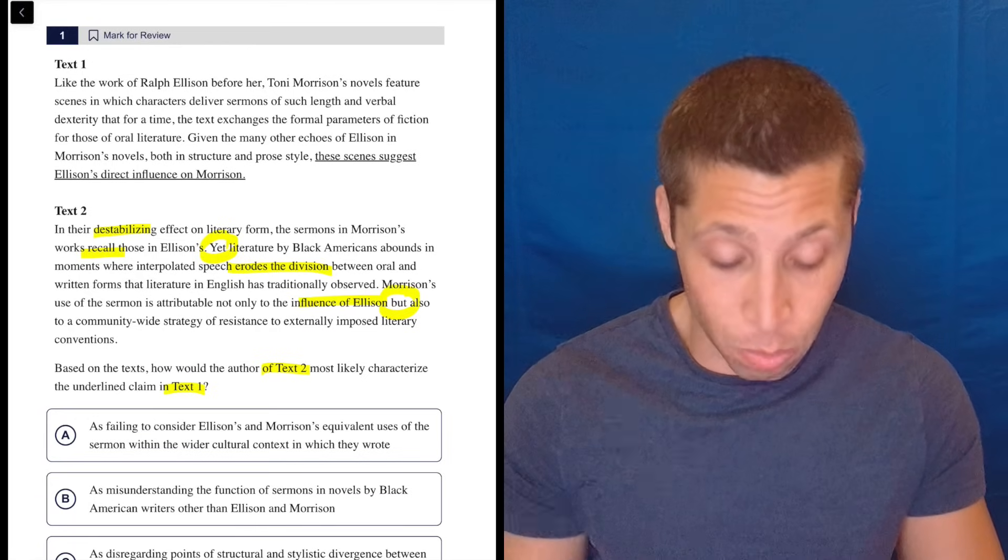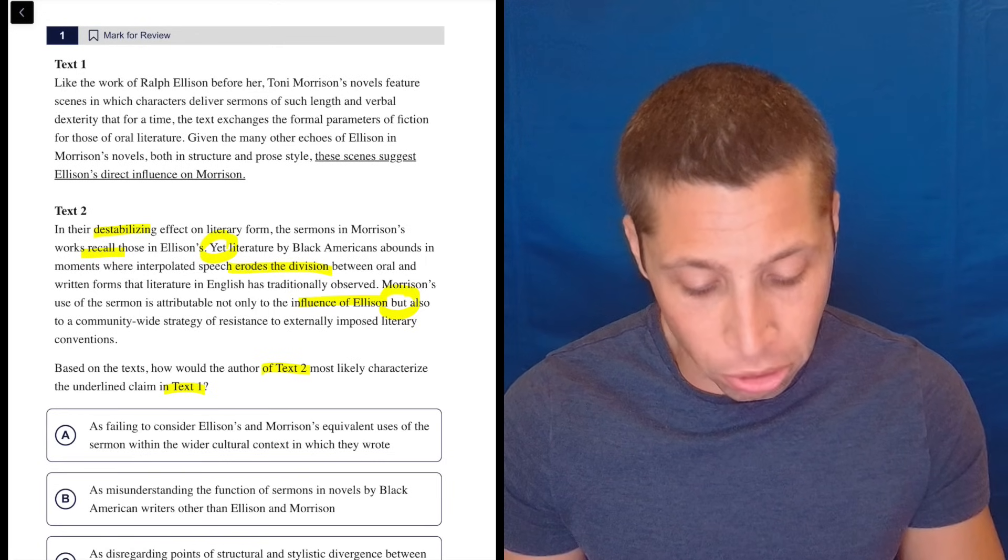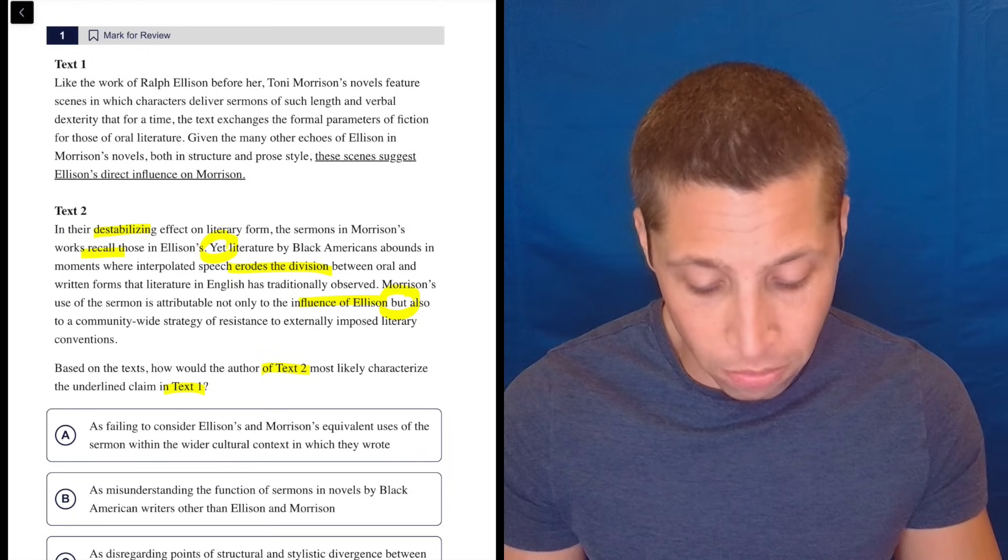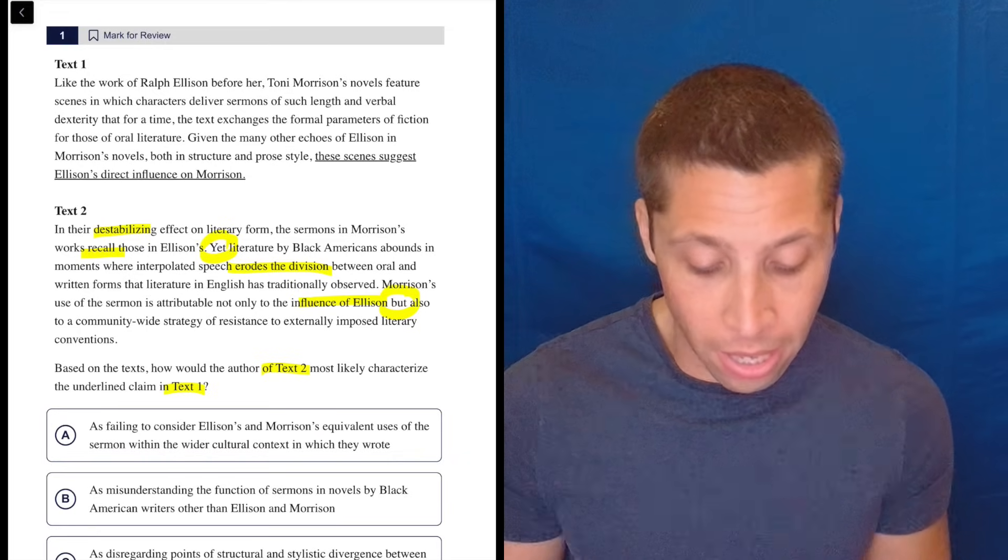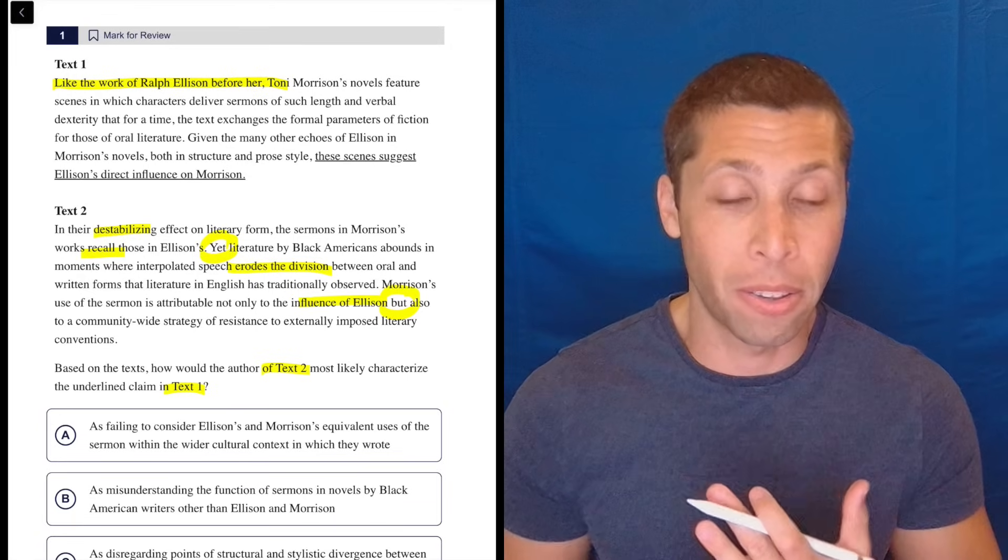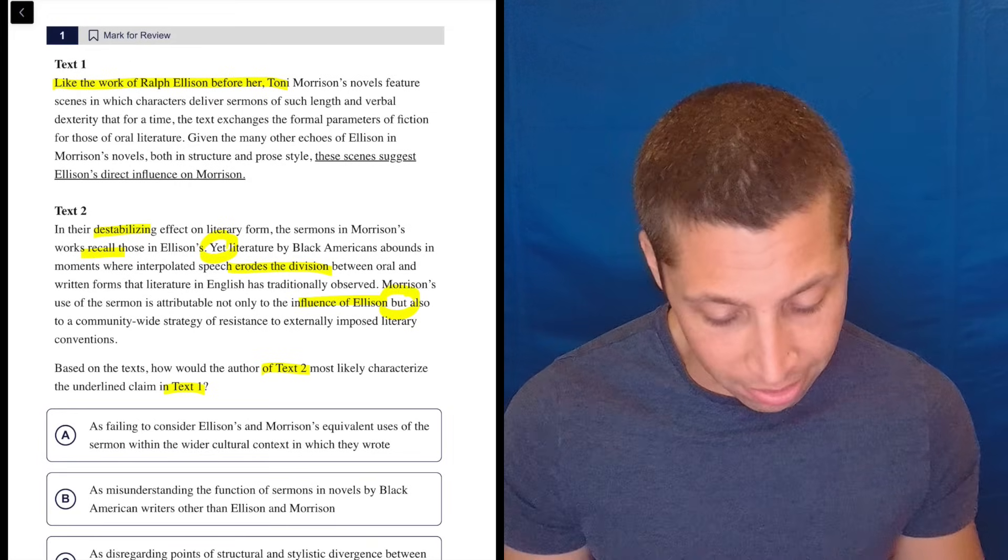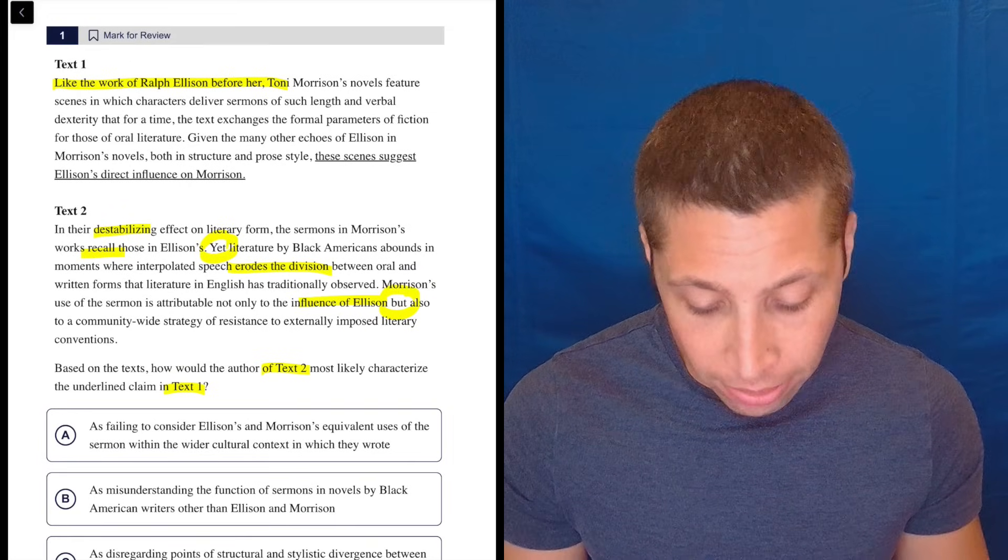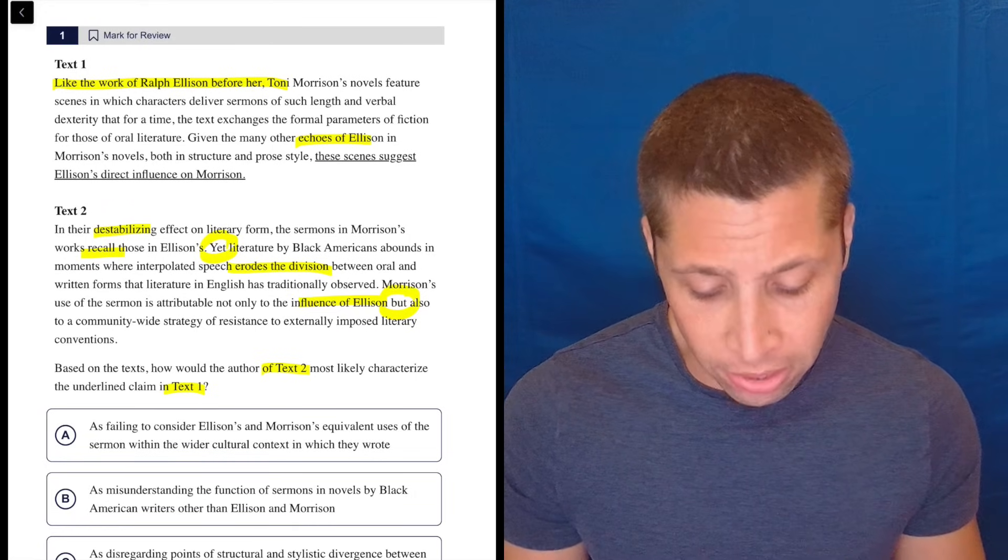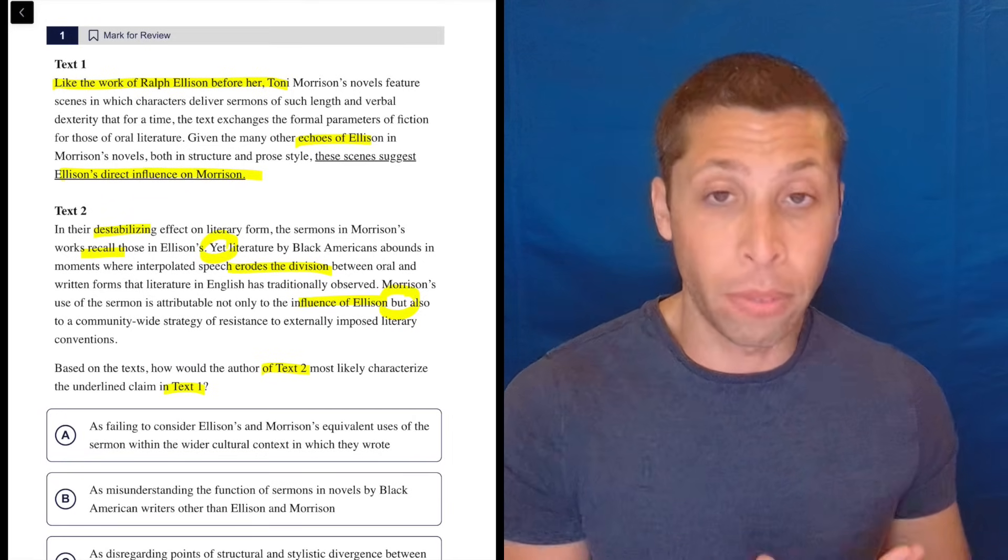Let's go to text one and see what we get from there. Text one, like the work of Ralph Ellison before her, Toni Morrison's novels feature scenes in which characters deliver sermons of such length and verbal dexterity that for a time, the text exchanges the formal parameters of fiction for those of oral literature. Given the many other echoes of Ellison in Morrison's novels, both in structure and prose style, these scenes suggest Ellison's direct influence on Morrison. I mean, passage one is just saying Ellison influenced Morrison.